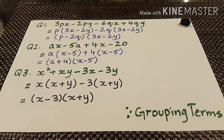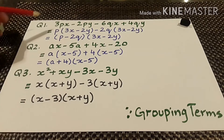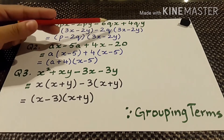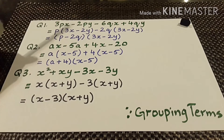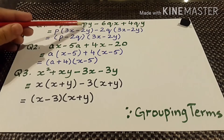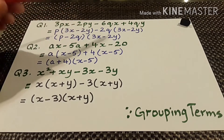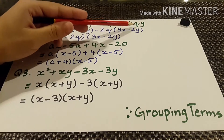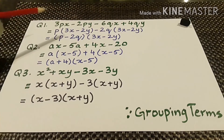The very first method of finding the factors or doing the factorization is grouping the terms. Question number 1 states: 3px minus 2py minus 6qx plus 4qy. We will make 2 groups — 3px minus 2py is one group, and minus 6qx plus 4qy is the second one.